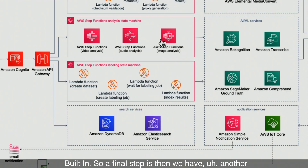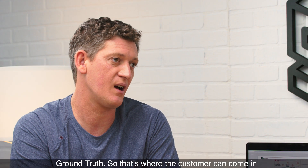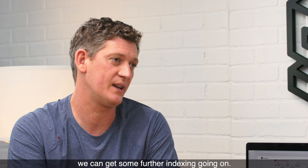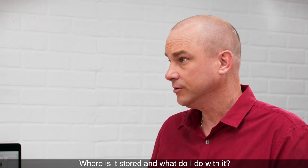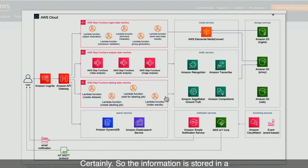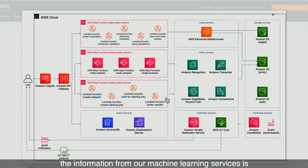The final step is another workflow that's going to do some labeling and indexing for us, and that's using SageMaker Ground Truth. That's where the customer can come in and actually identify people within the video content, and then send that information to Ground Truth so that we can get some further indexing going on. The information is stored in a combination of DynamoDB — that's where our metadata, our MD5 checksum, and general details about the content is stored — and then all of the information from our machine learning services is going to be stored in S3 alongside that proxy file.